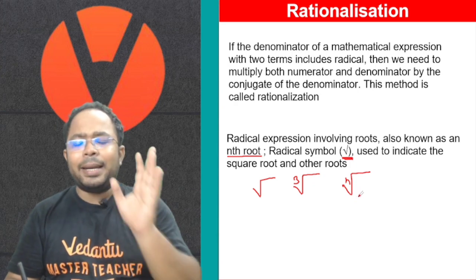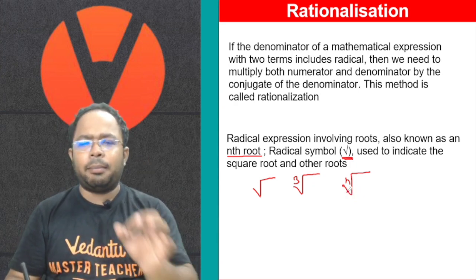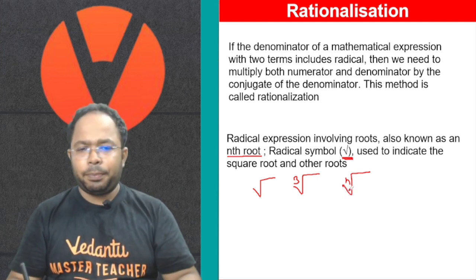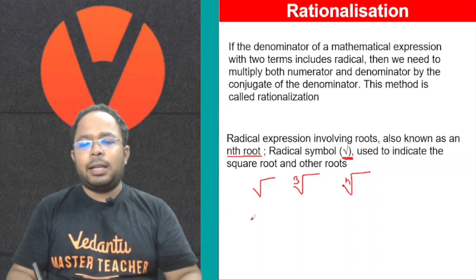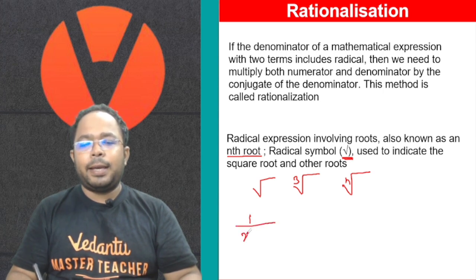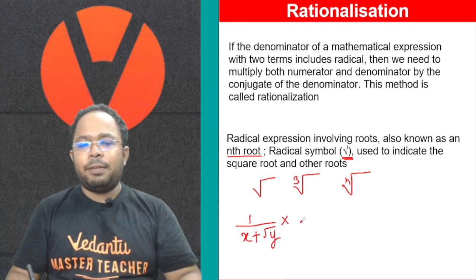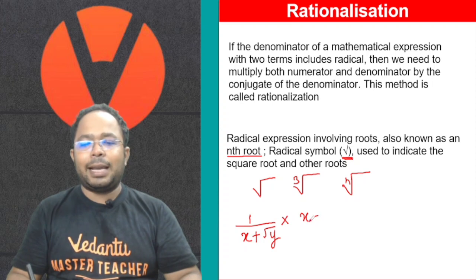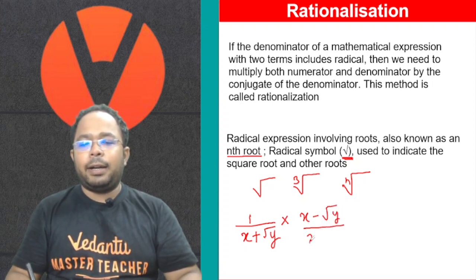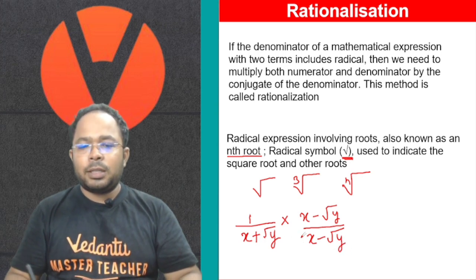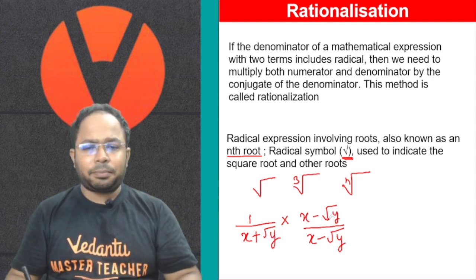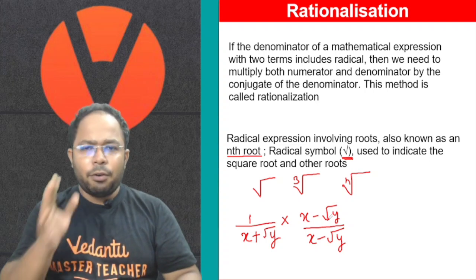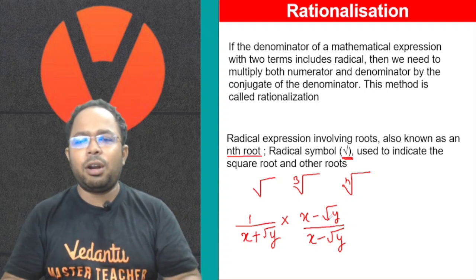In order to eliminate the radical from the denominator of a mathematical expression, we multiply with the conjugate of the denominator. That process is called rationalization. For example, if we have 1 upon (x + √y), we multiply with the conjugate (x − √y) over (x − √y), eliminating the radical from the denominator.